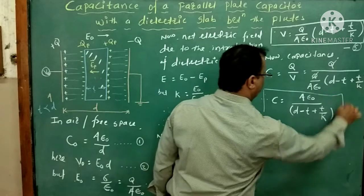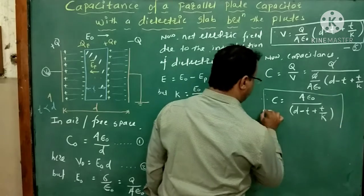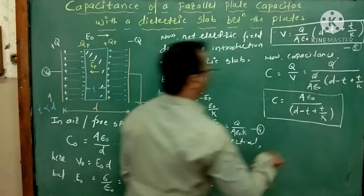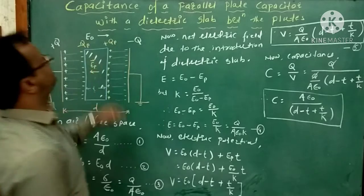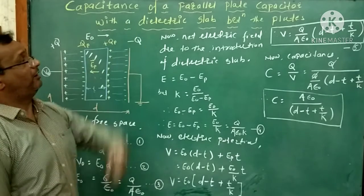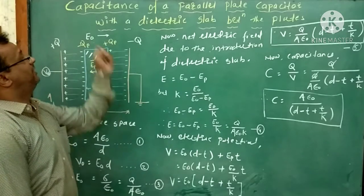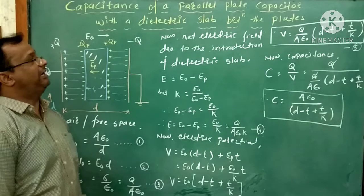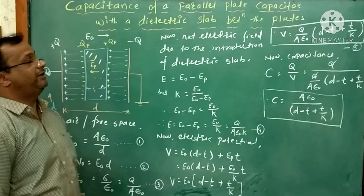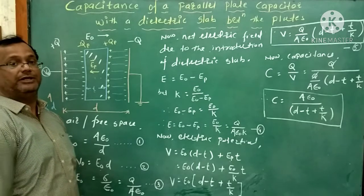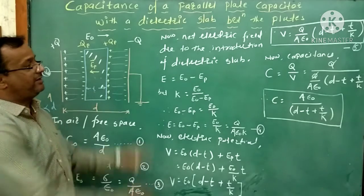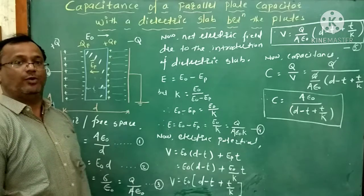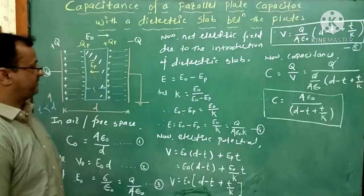This is the capacitance of an internal plate capacitor with a dielectric slab in between the two plates. See all the equations once.